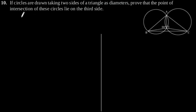Exercise 10.5, Question number 10. If circles are drawn taking two sides of a triangle as diameter, prove that the point of intersection of these circles lies on the third side.